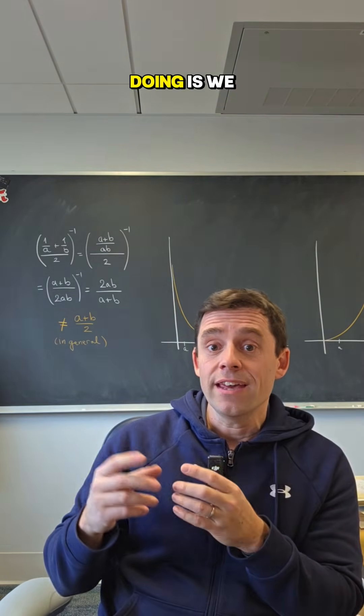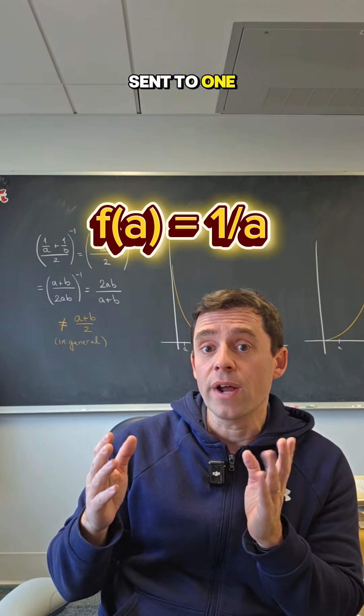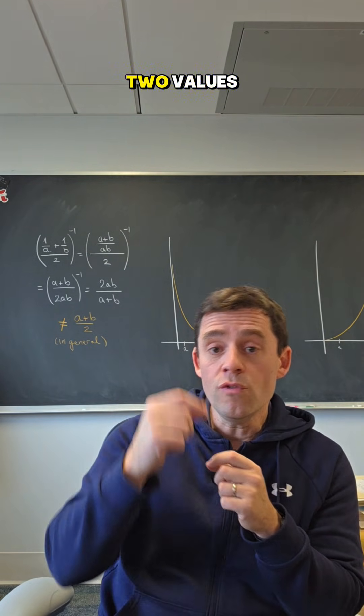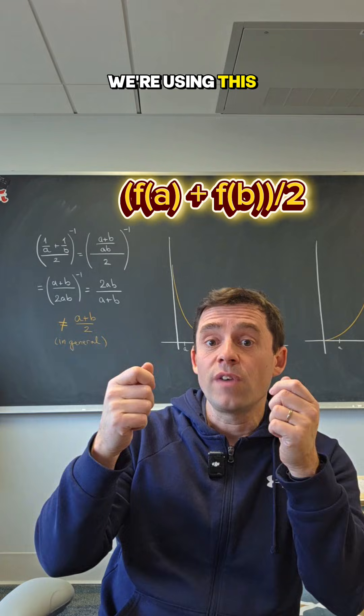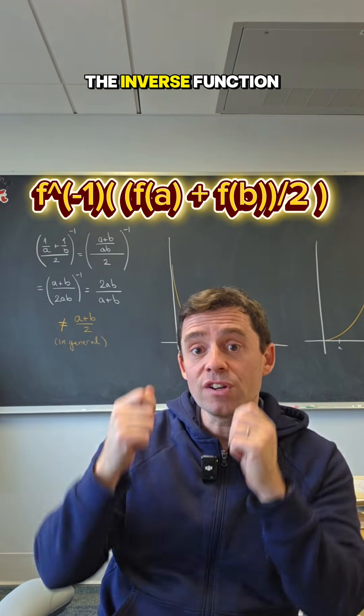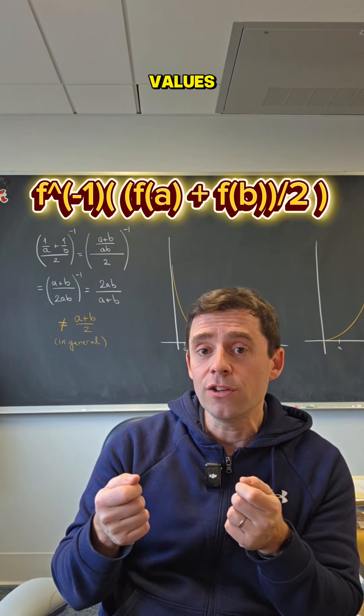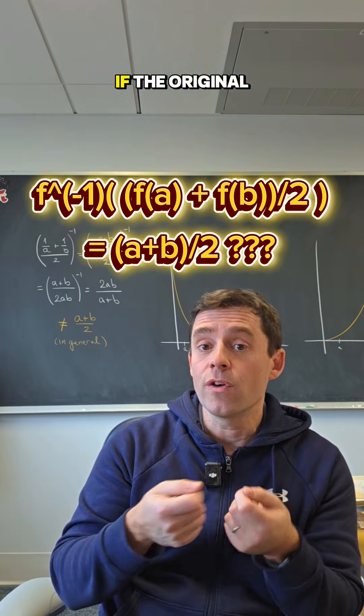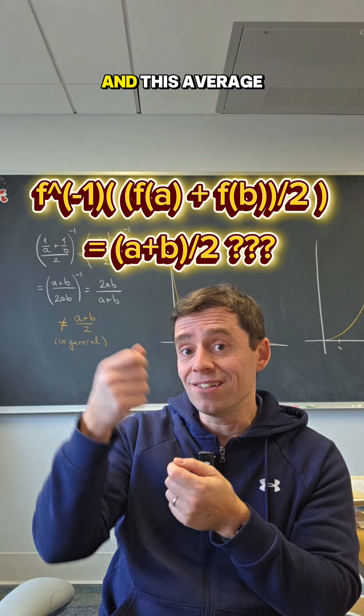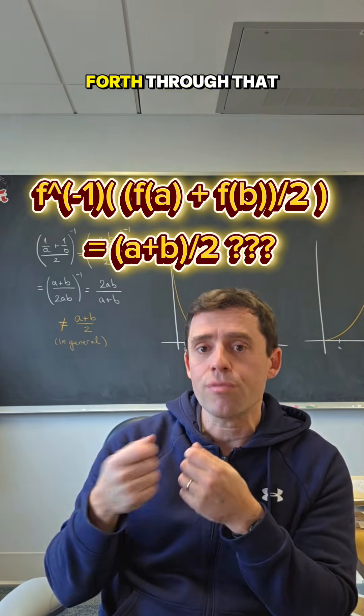Here, what we're doing is we have a function, in this case inversion, A is sent to 1 over A, and we're taking two values, we're using this function, we're doing the average of those two values, and then using the inverse function to bring it back to the original set of values, and try to compare if the original average of values and this average that I'm getting, coming back and forth through that function, if those averages coincide.